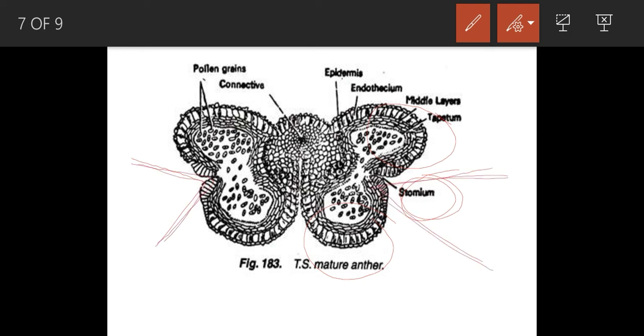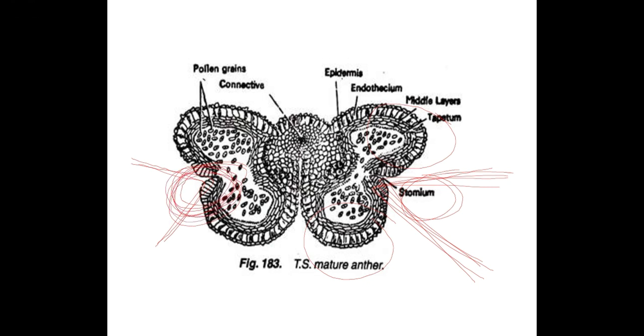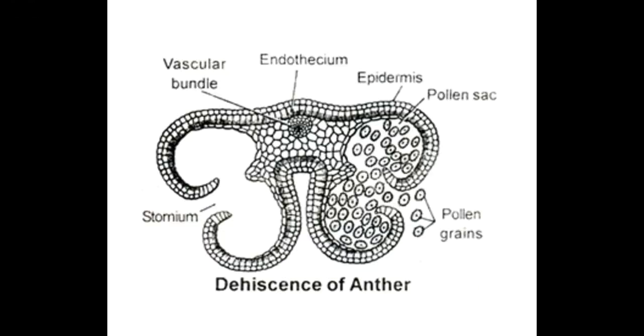As a result, a concave cavity will form. When this layer contracts, tension will be produced. Due to this tension, splitting will start at the place of the stomium. This is where the splitting will start, due to which the pollen grains will be released.